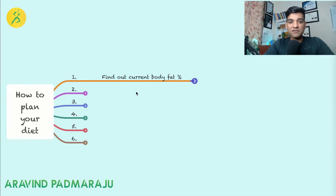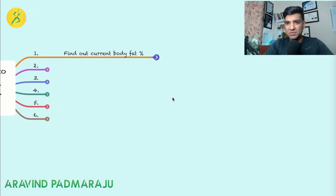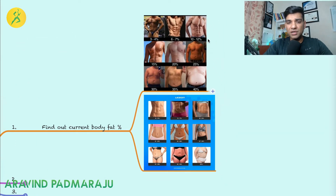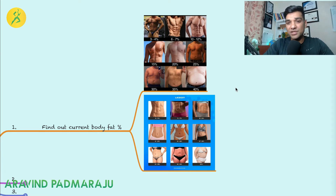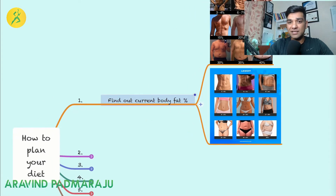The first step before starting a fitness journey is to find out your body fat percentage. You can check my previous video for details on parameters to look at. There are online calculators to find your current body fat percentage, or you can use reference pictures for men and women to get a rough idea. When I started my journey I was around 40% body fat. This gives you the baseline of where you currently are.